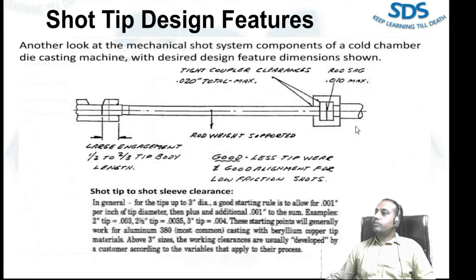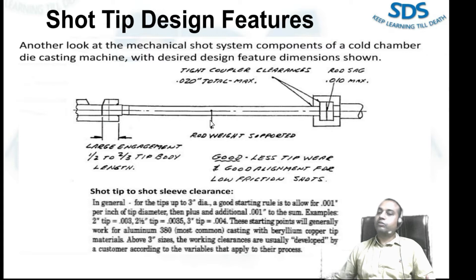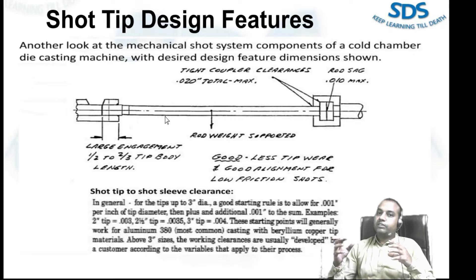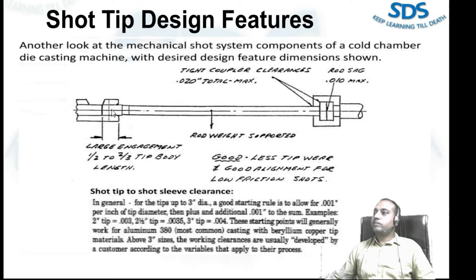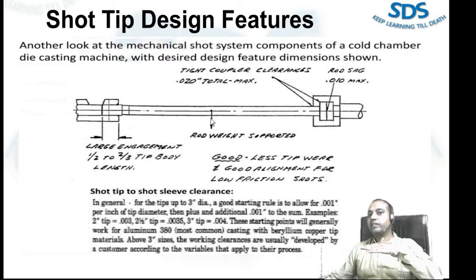Another look at the mechanical short system component of a cold chamber die casting machine with desired design feature dimensions. In this case, there is a large engagement, and the rod weight is noted. The alignment of our plunger is disturbed when we don't have proper alignment. If this engagement is more than 1/3 to 2/3 of tip body length — at least 2/3 — the alignment is maintained.